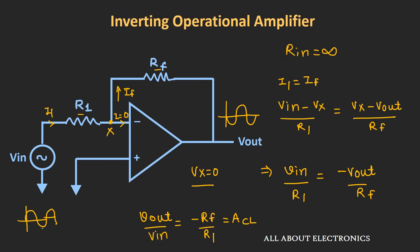If we apply a sinusoidal signal at the input, at the output we will get an amplified sinusoidal signal that is 180 degrees out of phase with the input — that is why this configuration is known as the inverting configuration, because the output gets inverted with respect to the input. For example, if RF equals 2 kΩ and R1 equals 1 kΩ, the gain of the op-amp will be 2. If we apply a 1V signal, at the output we will get a 2V signal which is 180 degrees out of phase. By controlling the values of RF and R1, we can control the gain and use this op-amp as an amplifier.